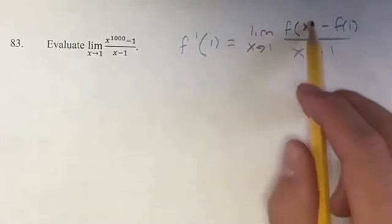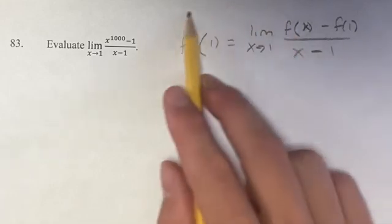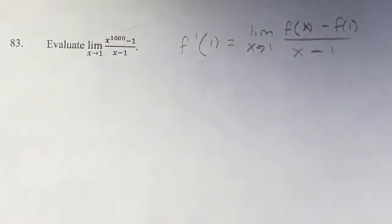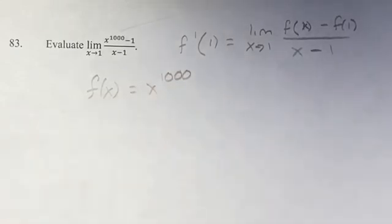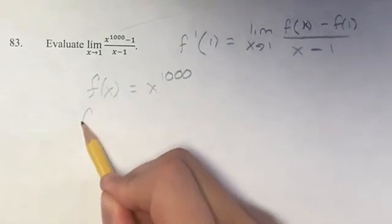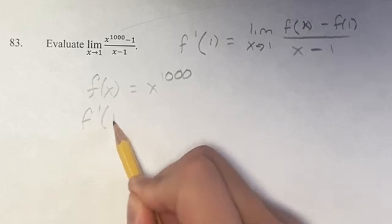What is f in this situation? It's this term right here, which corresponds to this x to 1,000 right here. So f of x is equal to x to the 1,000. And this problem is basically asking us, what is the derivative at 1?